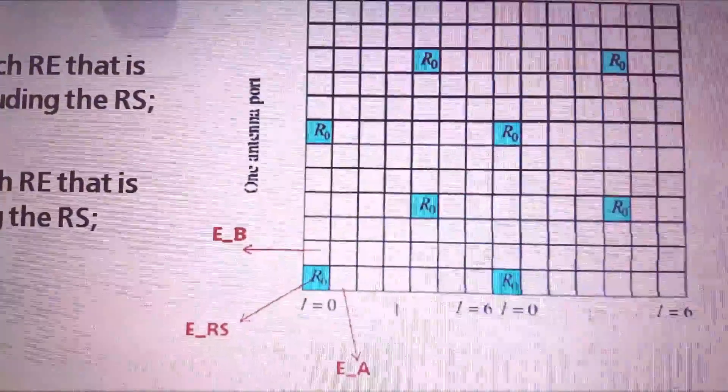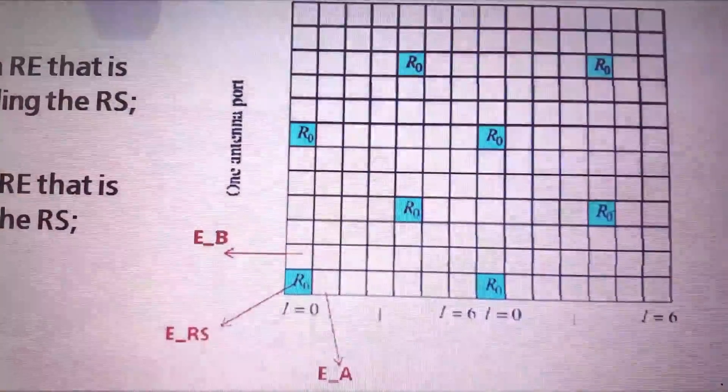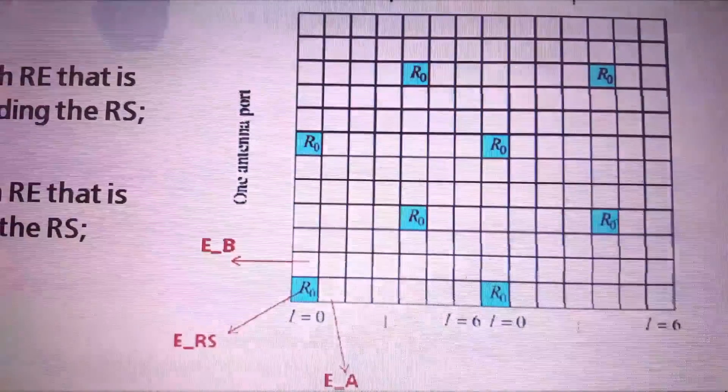So I think that's quite easy to understand now — what EA, EB, and ERS are. ERS is the exact resource element where we transmit the reference signal. That was the initial concept and introduction about reference signals. Next, we move to PA and PB values.